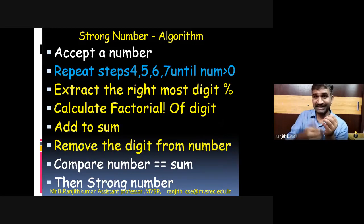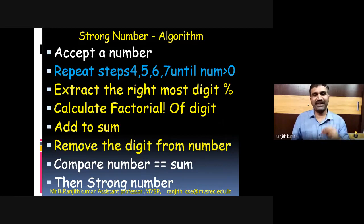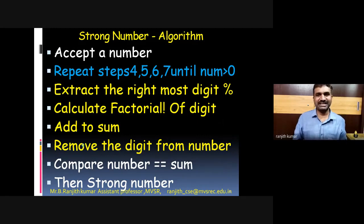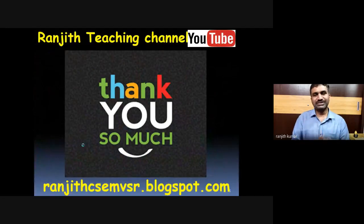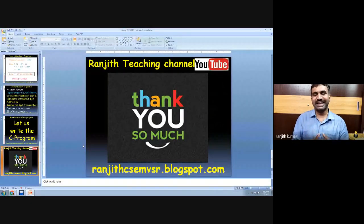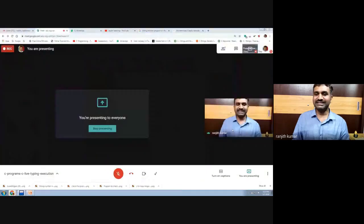We use two loops: the outer loop handles the strong number logic, while the inner loop calculates the factorial of each individual digit. Then we compare and decide whether it is a strong number or not. Please keep typing programs live, execute them, check errors and corrections — learn in live only, don't copy and paste. Thank you, see you in the next program, have a great day.